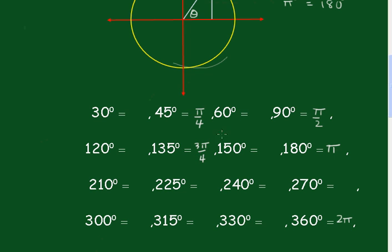Now, we can see that 60 degrees is 1/3 of 180, so that's π/3. Which makes this one 2π/3. We know that 30 is half of 60, so that'll be π/6. And this one's 5π/6.